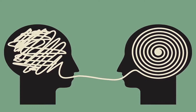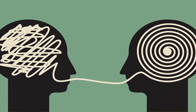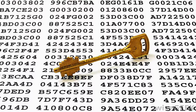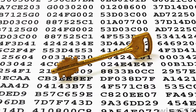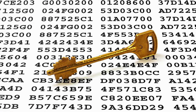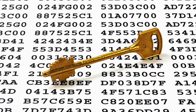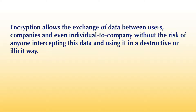Encryption can hence be used either to keep communication secret or to identify people involved in communication. The process of converting normal text into ciphertext is called encryption. Once encrypted, it is impossible to read or interpret the original data until it is decrypted back into its original state. Encryption allows the exchange of data between users, companies and even individual to company without the risk of anyone intercepting this data and using it in a destructive or illicit way.